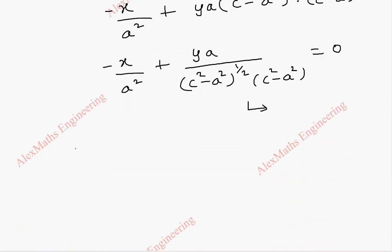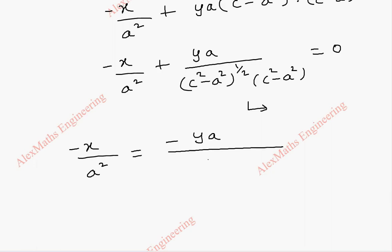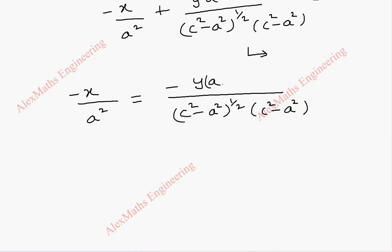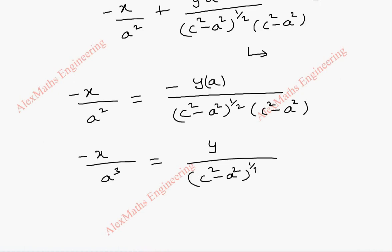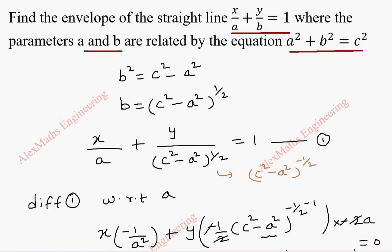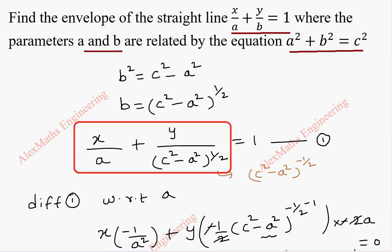Now we take one term to the other side: x/a² = y·a / (c² - a²)^(3/2). Bringing the extra a to the other side: x/a³ = y / (c² - a²)^(3/2). Cancelling the minuses, we rearrange to get expressions that can be replaced by 1. We need x/a, so a³ is split into a × a².